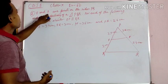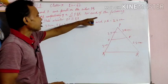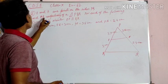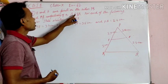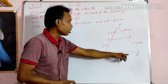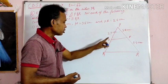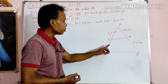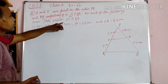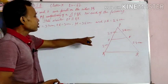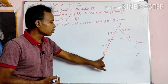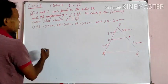E and F are points on the sides PQ and PR respectively of triangle PQR. This is triangle PQR, in which E is any point on PQ, and F is any point on PR. You have to check whether EF is parallel to QR. Let us solve it.